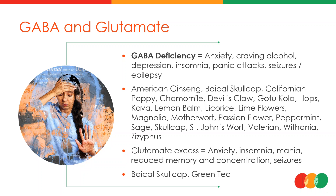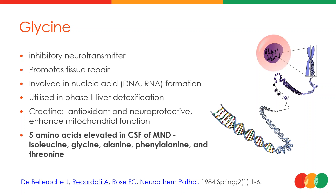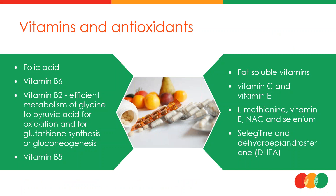Glycine is an inhibitory neurotransmitter involved in tissue repair and RNA and DNA metabolism. Five amino acids tend to be elevated in the cerebrospinal fluid of MND patients: isoleucine, glycine, alanine, phenylalanine, and threonine. When examining an MND patient's amino acid status — measured in blood, serum, or urine — a compounder can compound based on this level of research. Methylating cofactors such as folic acid, vitamin B6, and B12 are very important because they are needed for the metabolism of these amino acids.